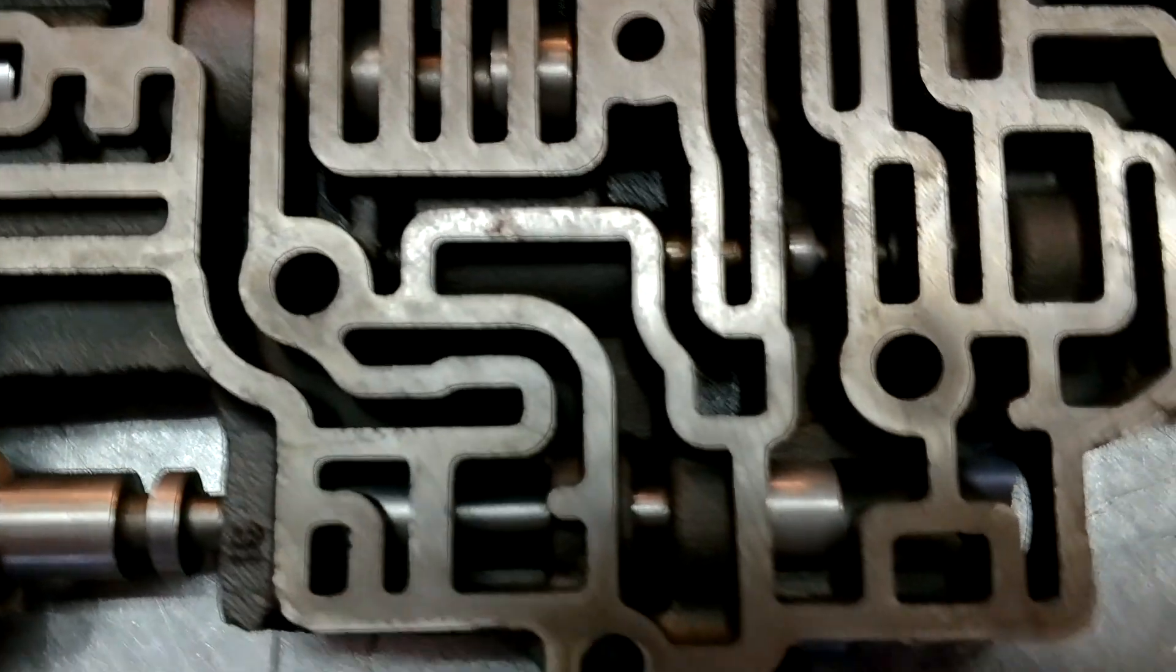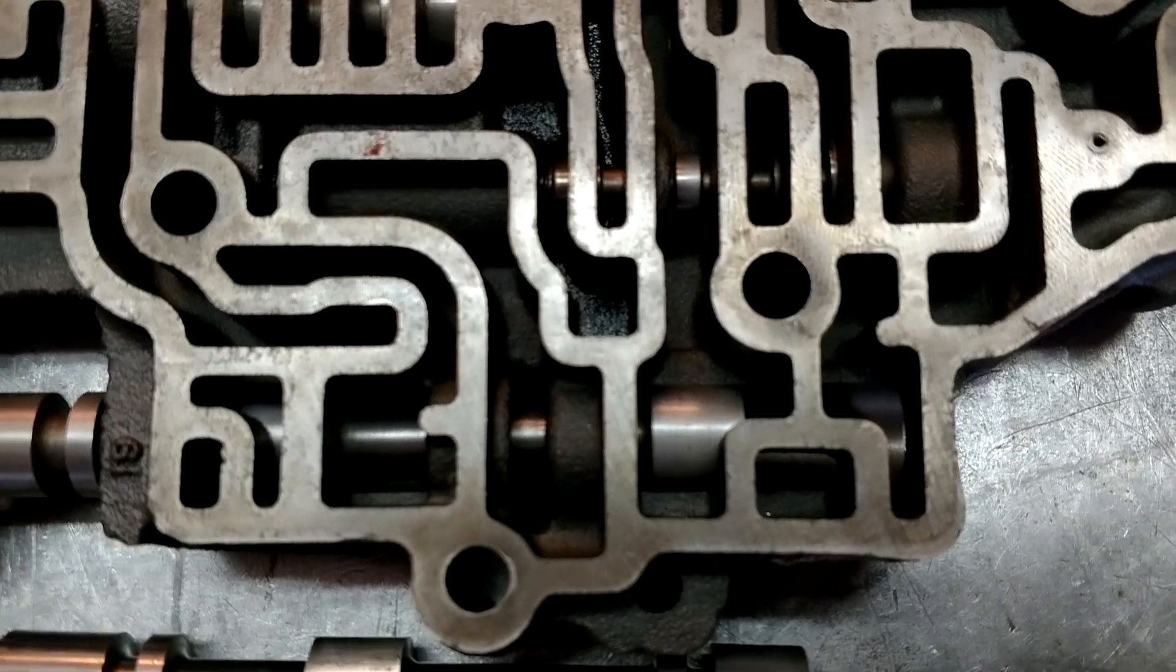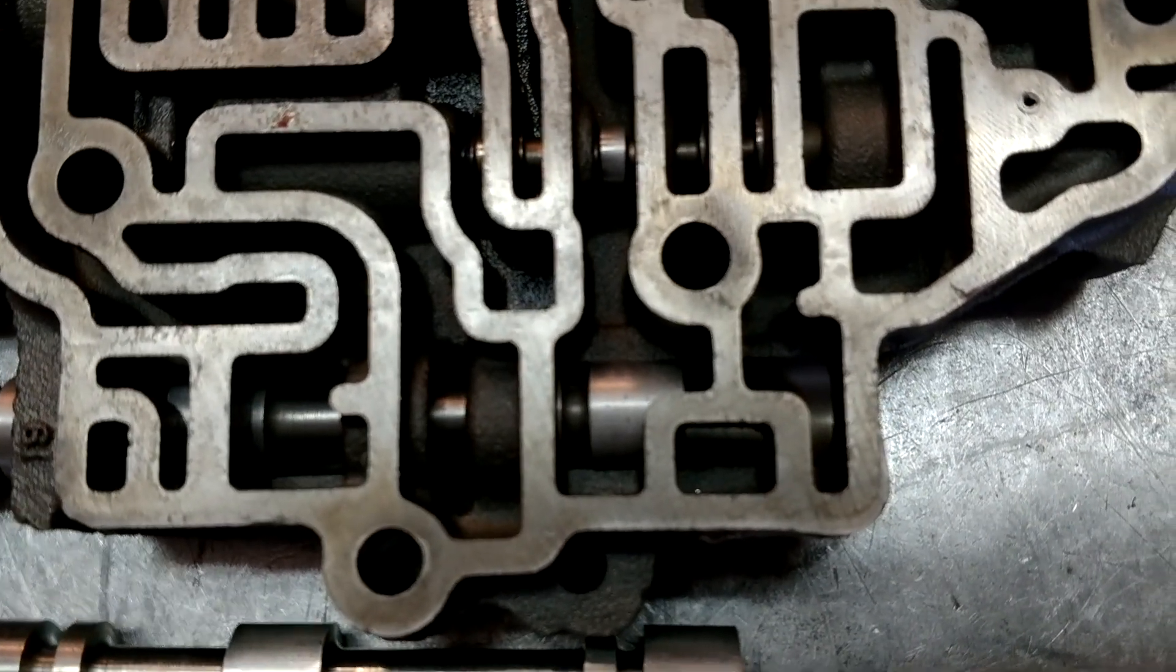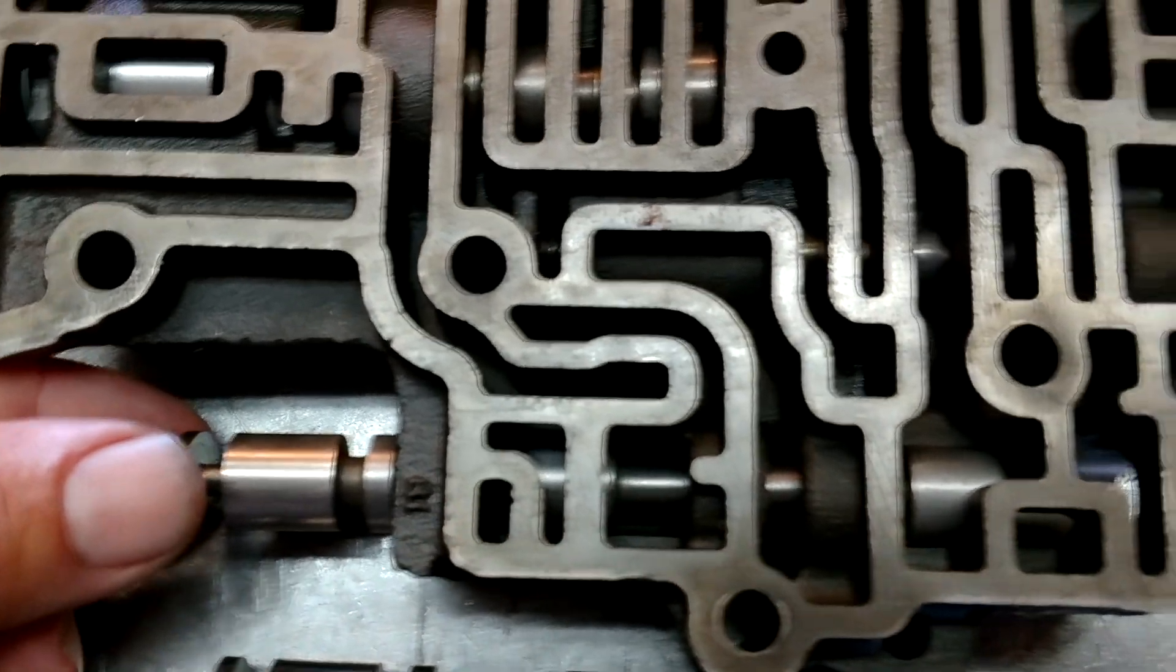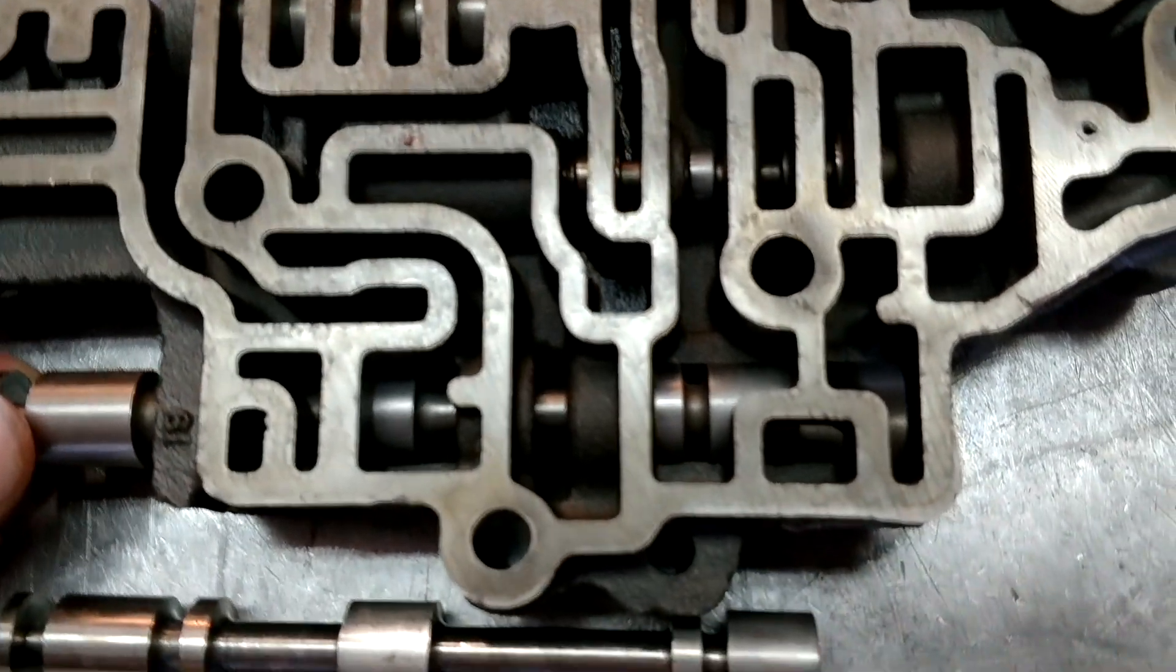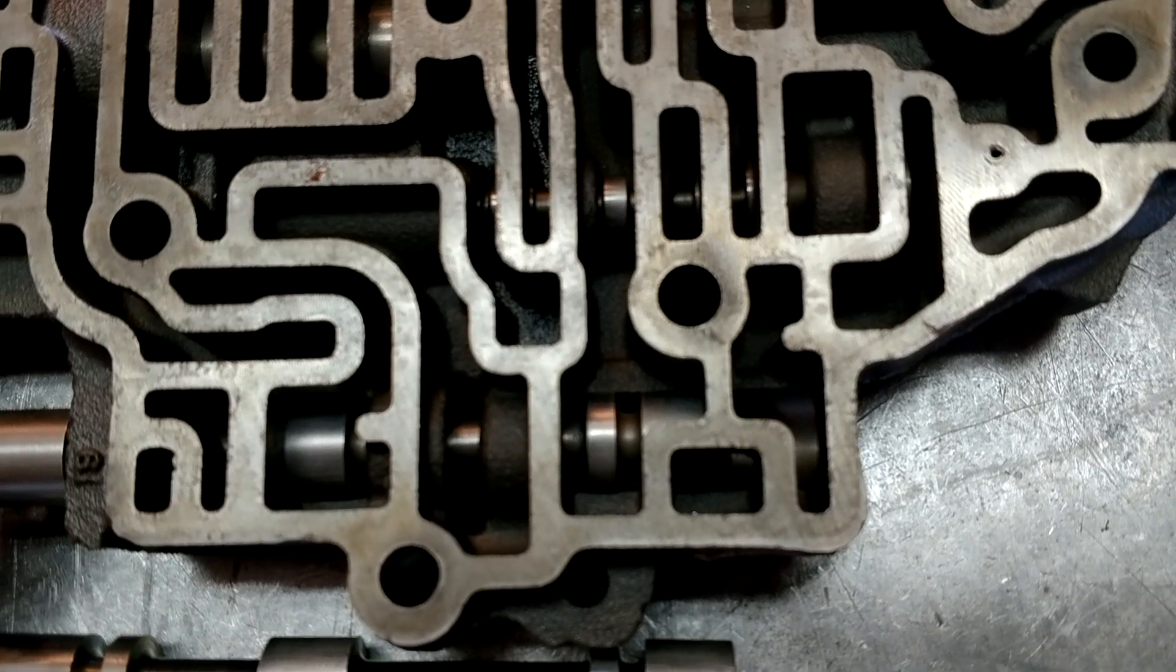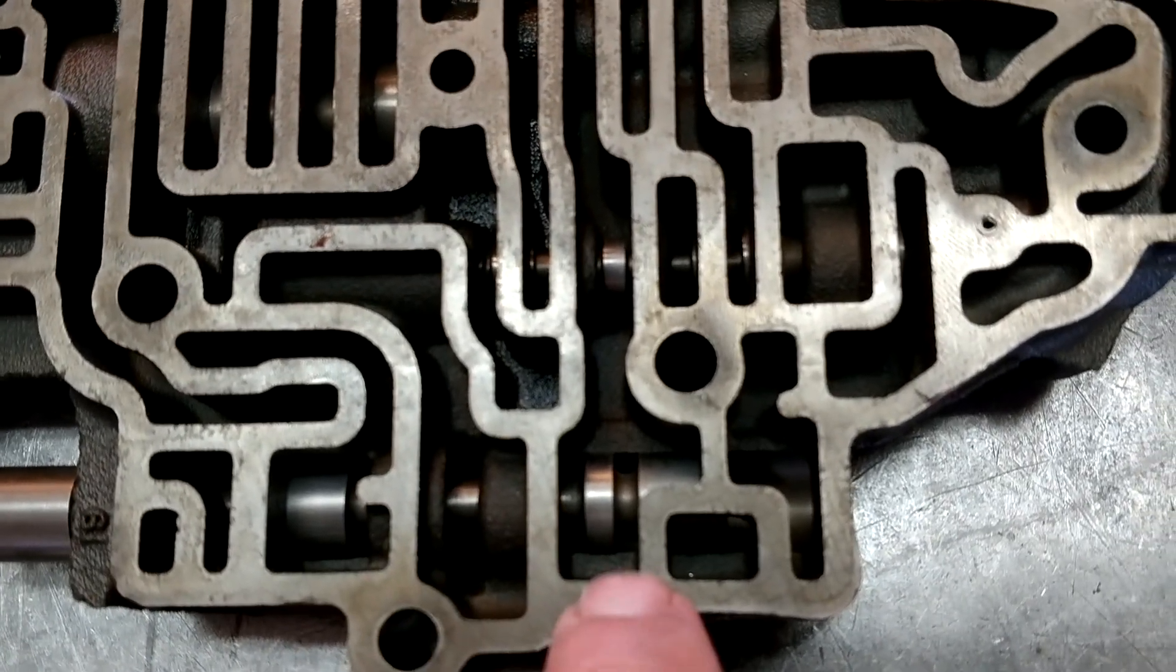Go back down into neutral. Yeah, right about right here we close off reverse. Go back into drive. About right there we've opened up line pressure to drive.